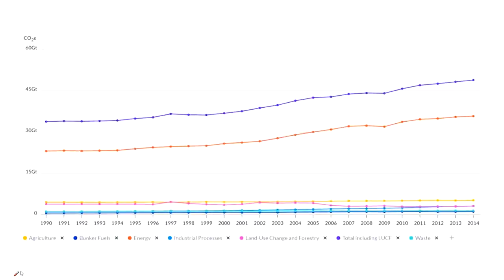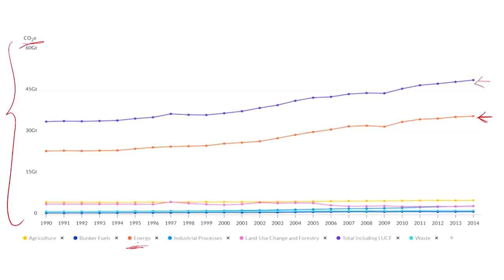On the y-axis we have carbon dioxide equivalents given out, and here we have the total. The major sector that leads to emission of greenhouse gases — or carbon dioxide in this context — is energy. There are different sub-sectors with respect to energy, which we will look at later.